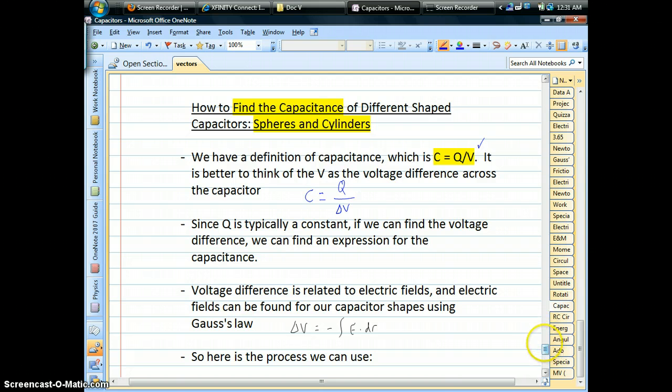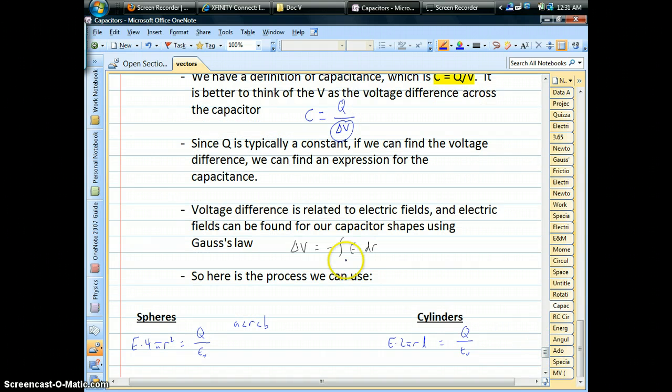Charge is usually just a number. If we're able to find out what the voltage difference is, we should be able to define our capacitance for a given shape capacitor. We know voltage difference is determined by what the electric field is in that gap, between the two spheres, between the two cylinders, or between the two plates.